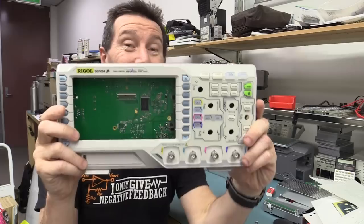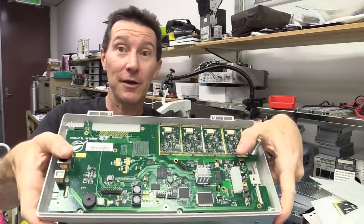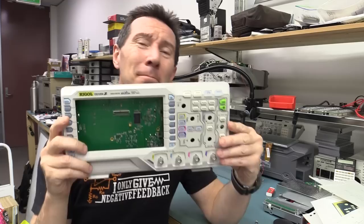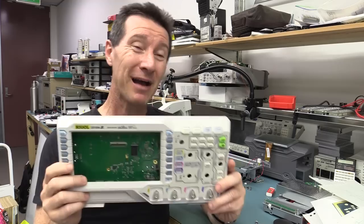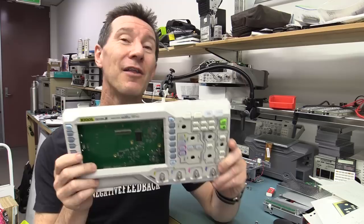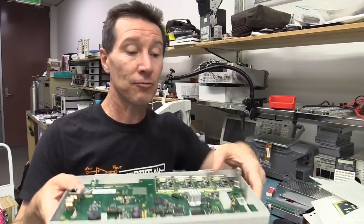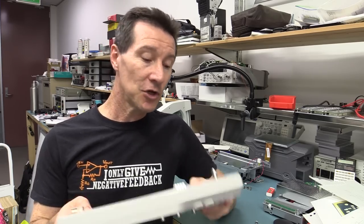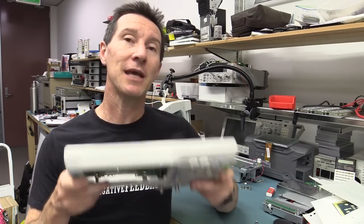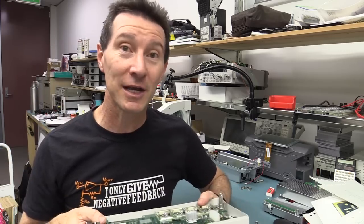Hi, in my previous video I did a teardown of the new Rigol DS1052Z. There it is, it's still in bits. An amazingly low cost oscilloscope for four channels, $399 bucks. It's absolutely incredible.